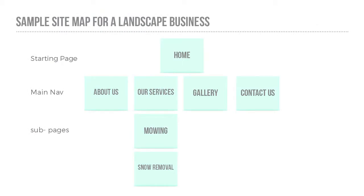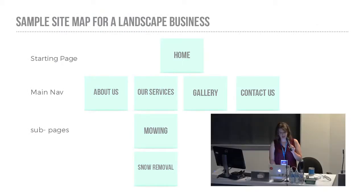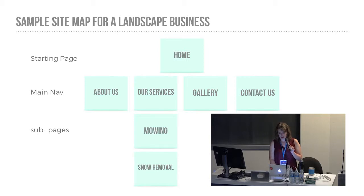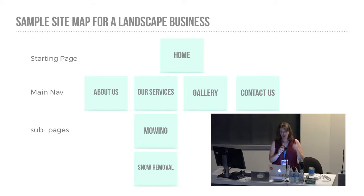Here is a sample site map for a landscape business. Starting with the homepage, the next row has the main navigation pages: About Us, Our Services, Gallery, and Contact Us. There are two sub-pages in a sub-menu under Services for Mowing and Snow Removal. From the site map, we can tell we need to design seven pages total. Doing this on paper with post-it notes is handy because you can rearrange them and get other people's opinions about how they would order things.